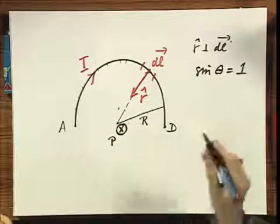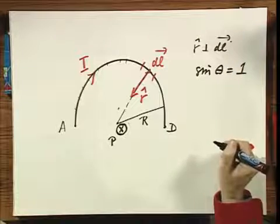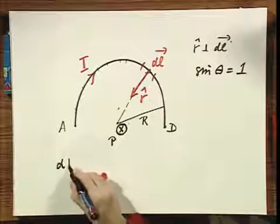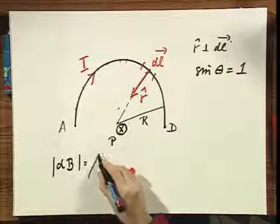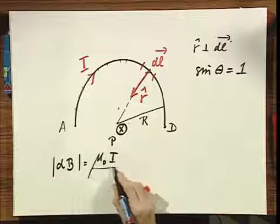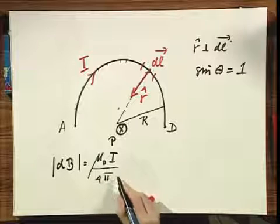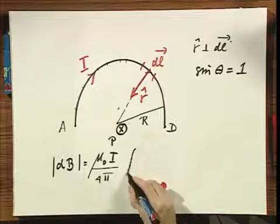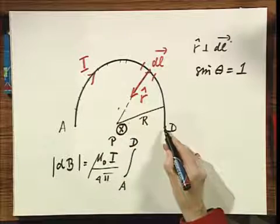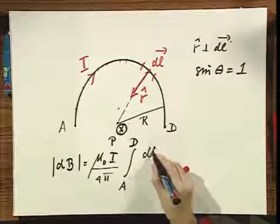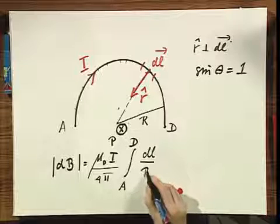All right, so I can delete the cross, and I can write down now what the magnitude of DB is, which is mu zero times I, divided by four pi. And I do now a very dirty integral from A to D along this arc of DL divided by R squared.